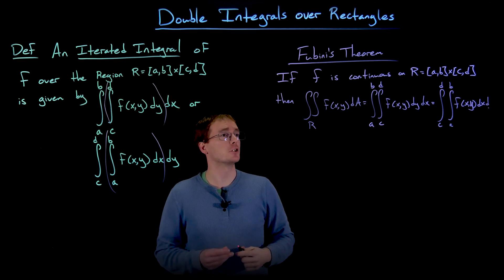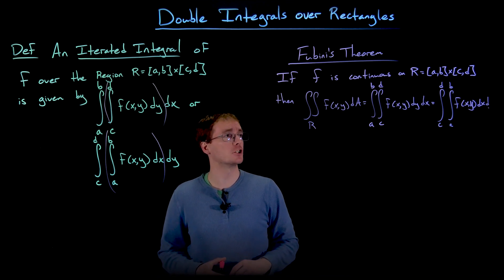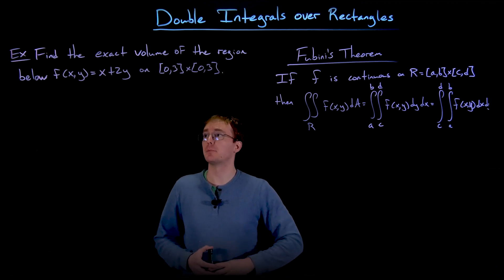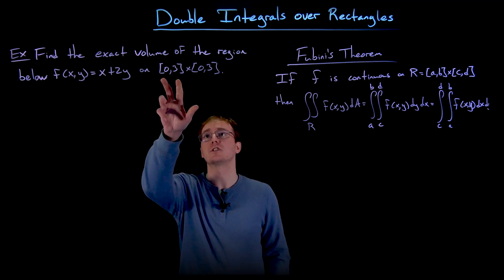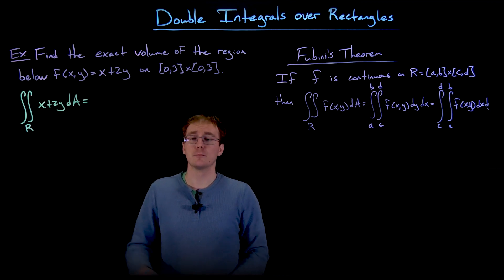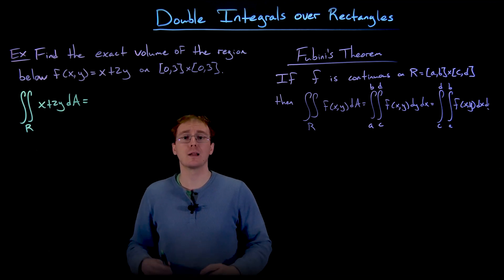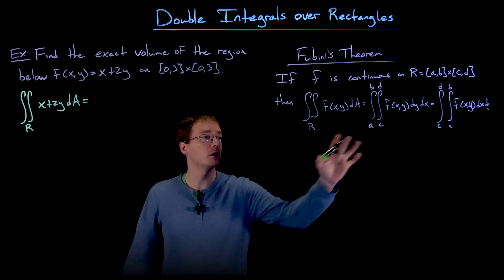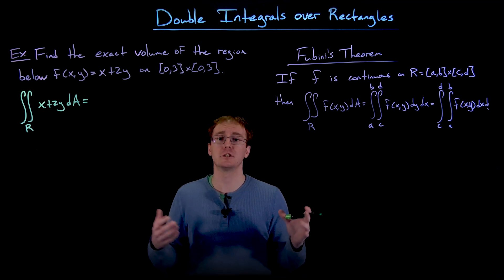Fubini's theorem states: if a function of two variables x and y is continuous over a rectangular region R, then the double integral of the function is equivalent to either iterated integral. In our example we want to find the exact volume below the surface f(x, y) = x + 2y over the rectangular region R going from 0 to 3 in both x and y. Fubini's theorem lets us do this algebraically, and we'll show that both orders of integration give the same answer.